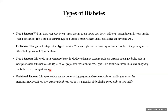Type 1 diabetes occurs because our immune system gets sensitized against our own pancreatic cells — specifically the cells that release insulin. The immune system destroys those insulin-producing cells. This is the basic pathophysiology of Type 1 diabetes.